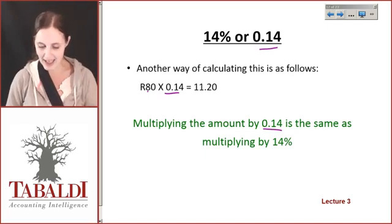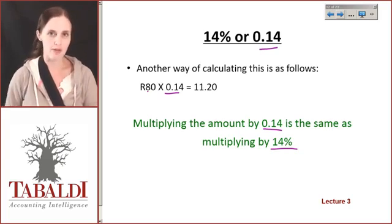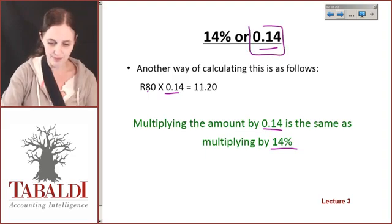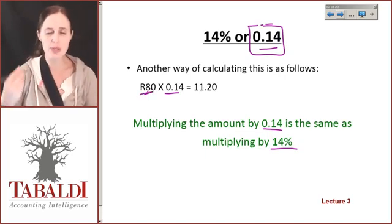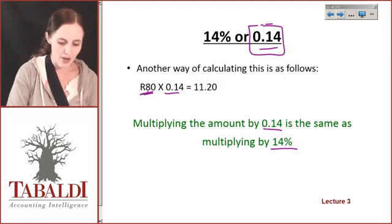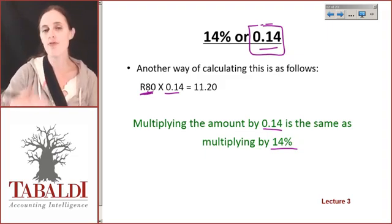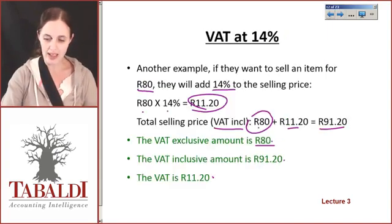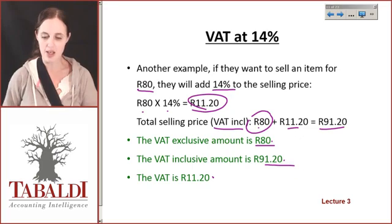Multiplying something by 0.14 is exactly the same as multiplying it by 14%. So in an exam, instead of always saying times 14%, you can multiply by 0.14. What that's basically saying is that 0.14 is the proportion of the total amount. So my 80 Rand represents 100% of my selling price, and the government says I must add another 14% onto my selling price, which means that when I actually sell this item for 91 Rand 20, as we calculated, that actually represents 114% of the number.